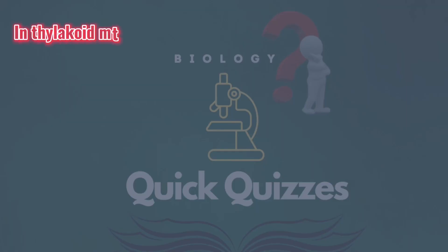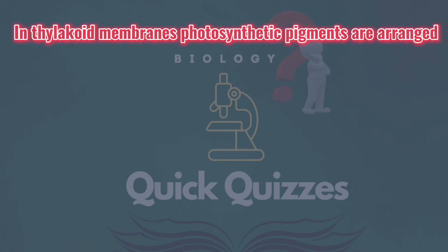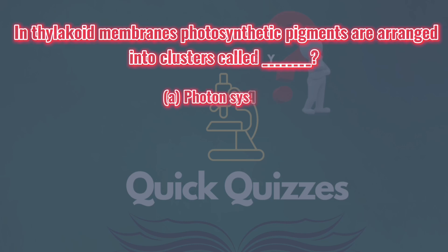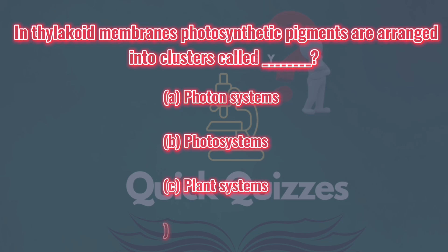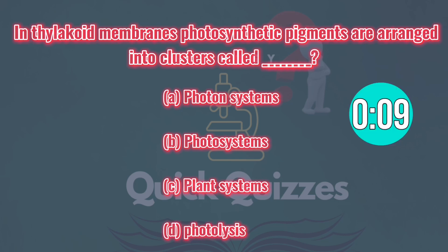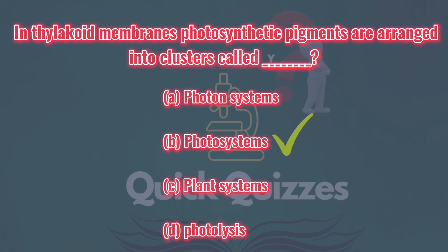In thylakoid membranes, photosynthetic pigments are arranged into clusters called: A) photon systems, B) photosystems, C) plant systems, D) photolysis. Correct answer: B, photosystems.